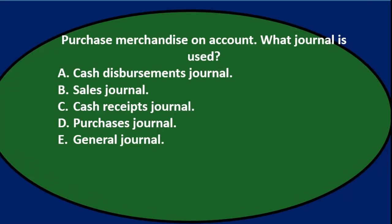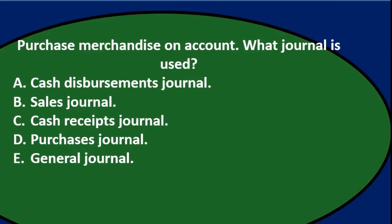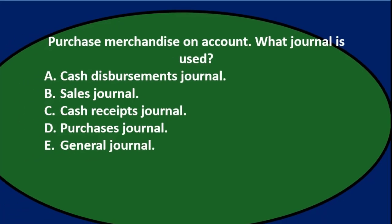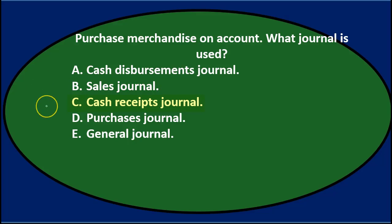In this presentation, we will take a look at multiple choice questions related to special journals. First question: Purchase merchandise on account — what journal is used? A. Cash disbursements journal. B. Sales journal. C. Cash receipts journal. D. Purchases journal. Or E. The general journal.